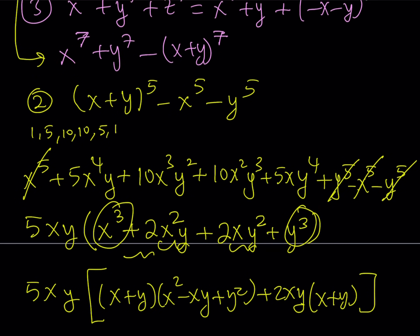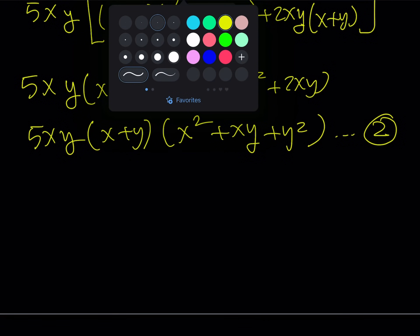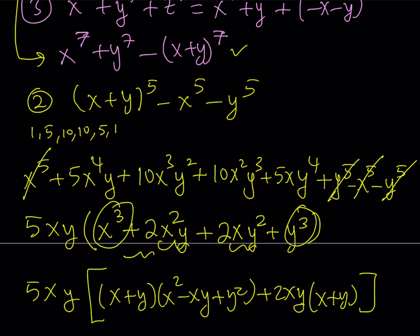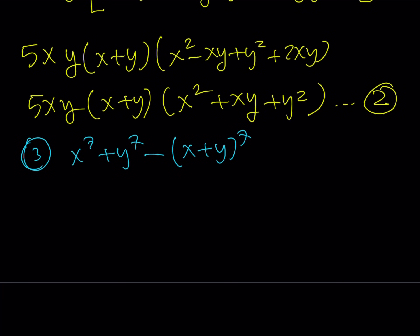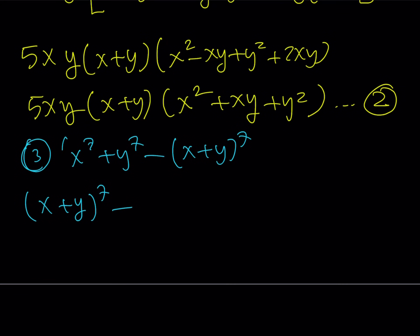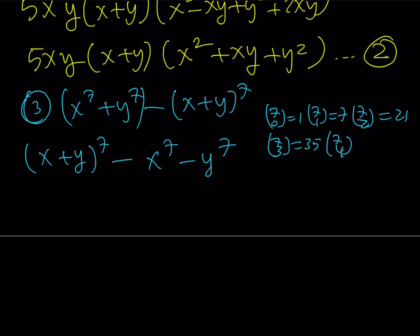Now for the third expression. After negating, it becomes x to the 7th plus y to the 7th minus the quantity x plus y to the 7th. For the binomial coefficients with power 7: 7 choose 0 is 1, 7 choose 1 is 7, 7 choose 2 is 21, 7 choose 3 is 35, and then 7 choose 4 is 35, 7 choose 5 is 21, and so on — the coefficients are 1, 7, 21, 35, 35, 21, 7, 1.